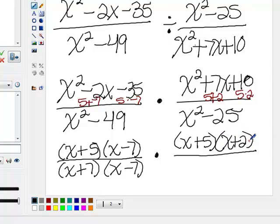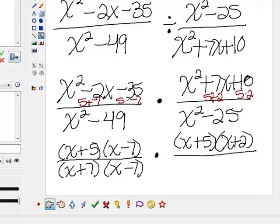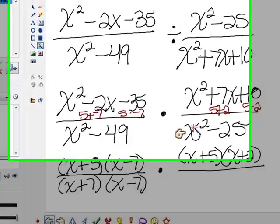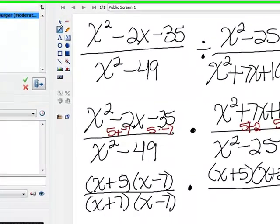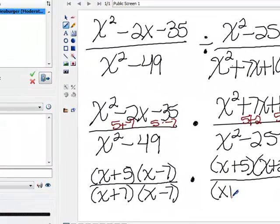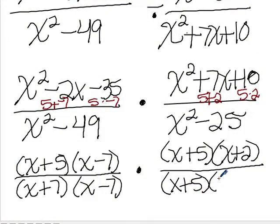Now let's look in our denominator. That again is a difference of squares. 25 is 5 times 5, and x squared is x times x. So this will factor into x plus 5 times x minus 5.